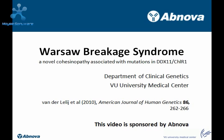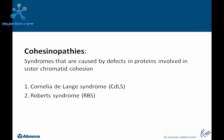First, we will give a short introduction about the cohesionopathies and sister chromatid cohesion, after which we will show why Warshaw-Braket syndrome can be included in the cohesionopathies as well. The term cohesionopathies was introduced to comprise syndromes caused by mutations in genes encoding proteins involved in sister chromatid cohesion. Thus far, there were two described cohesionopathies: Cornelia de Lange syndrome (CDLS) and Roberts syndrome (RBS). With the discovery of Warshaw-Braket syndrome, this disease can be added as a third cohesionopathy.